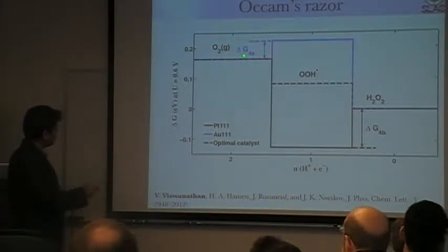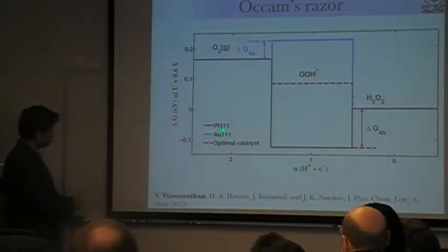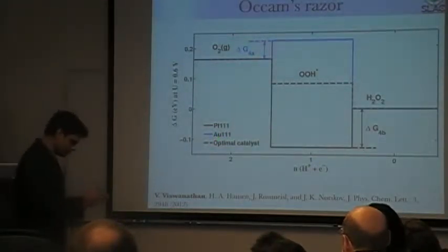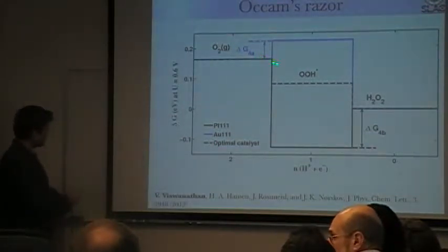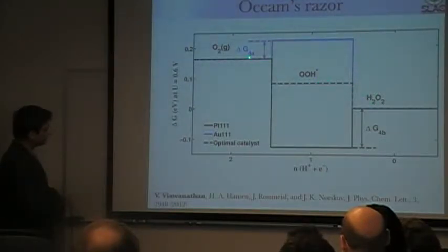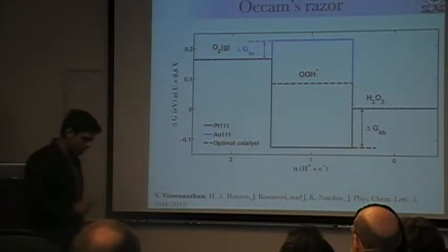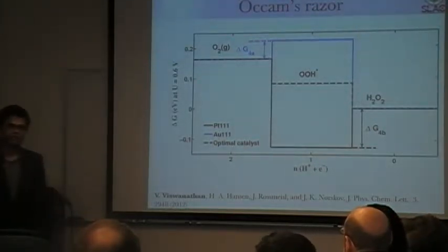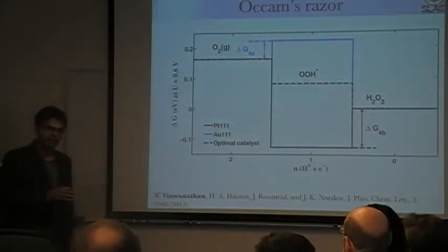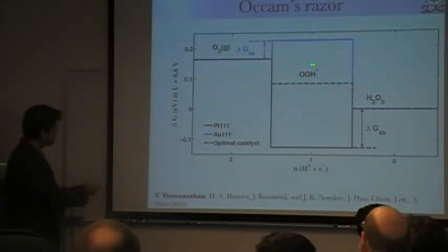Now, what you see is, Au(111), which supposedly performs two-electron reduction selectively, actually binds OOH weak enough that it almost catalyzes hydrogen peroxide at the equilibrium potential. It pays a small voltage penalty, but really, it's good for the reason that it's lousy for the reduction all the way to water. It's good for that reason, because it binds this intermediate weak enough that it goes to hydrogen peroxide.